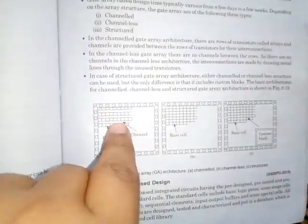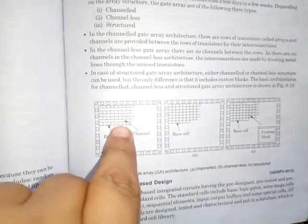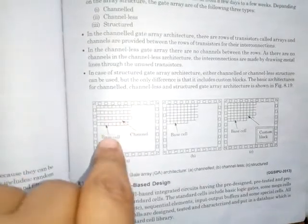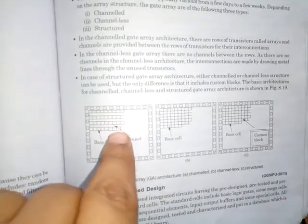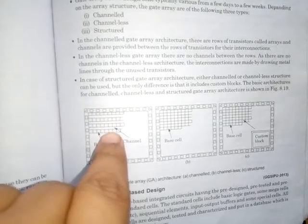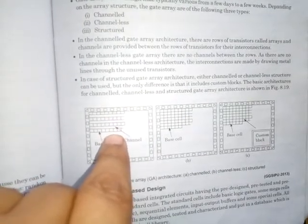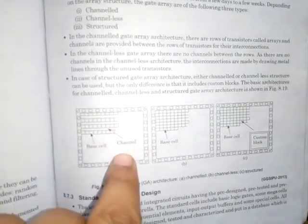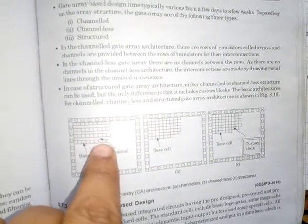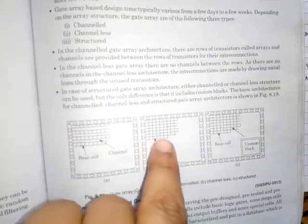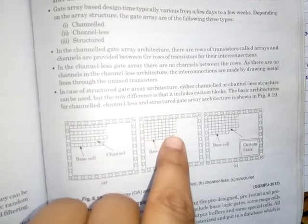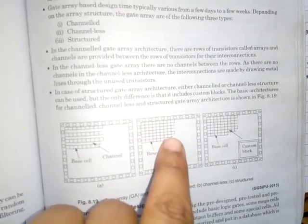In the channelled design style, as you can see these are transistors and it is channelled, it is base cell. So the interconnection between base cells or different transistors is being provided with the help of channel, whereas in channelless the channel is not present in this structure. You can see channel is not present and the interconnections are being provided using metal.